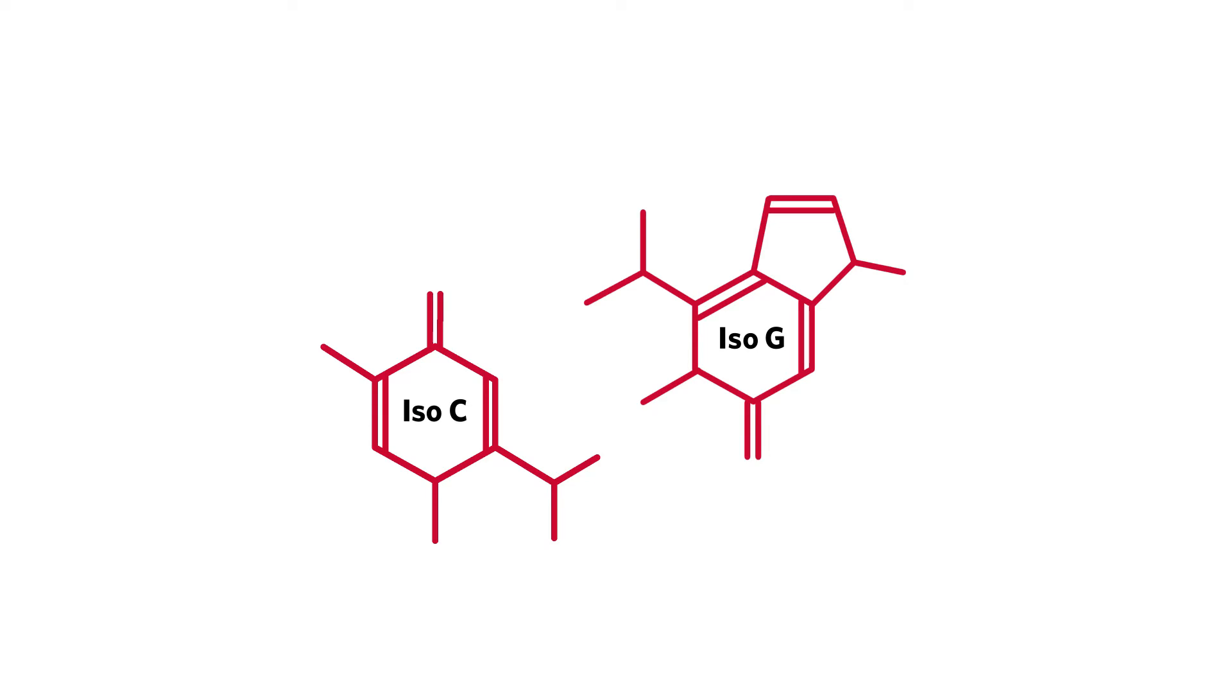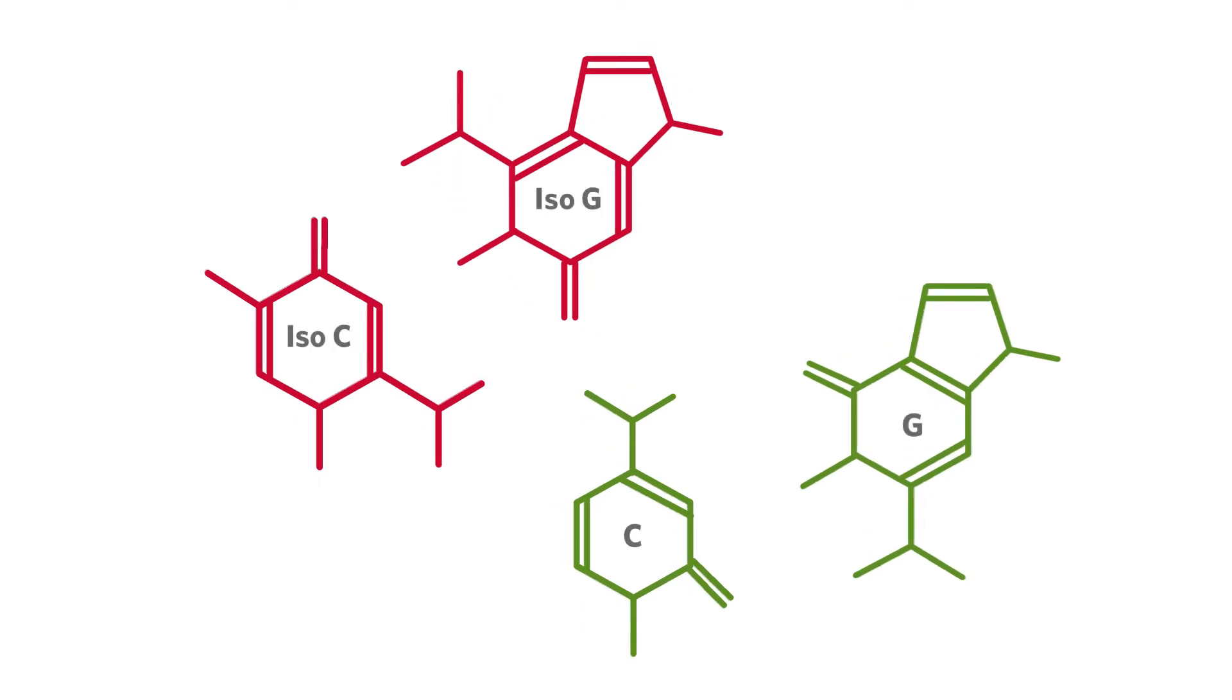Multicode uses isomers of the base pair cytosine and guanine, also called iso-C and iso-G. In the isomer pairs, the carbonyl group and amine groups are switched.